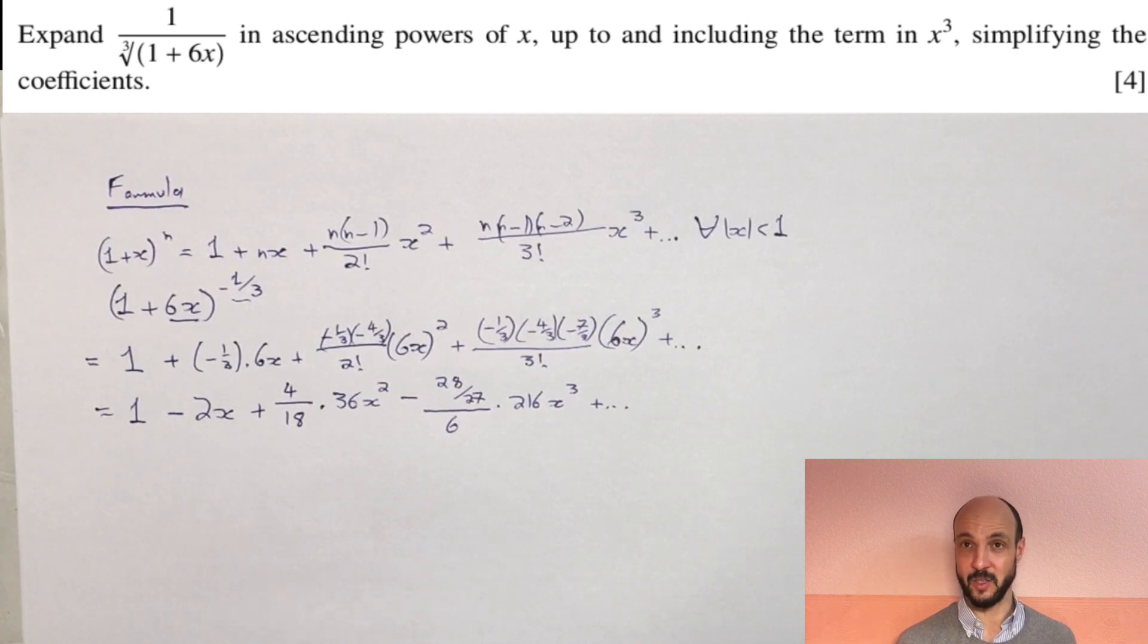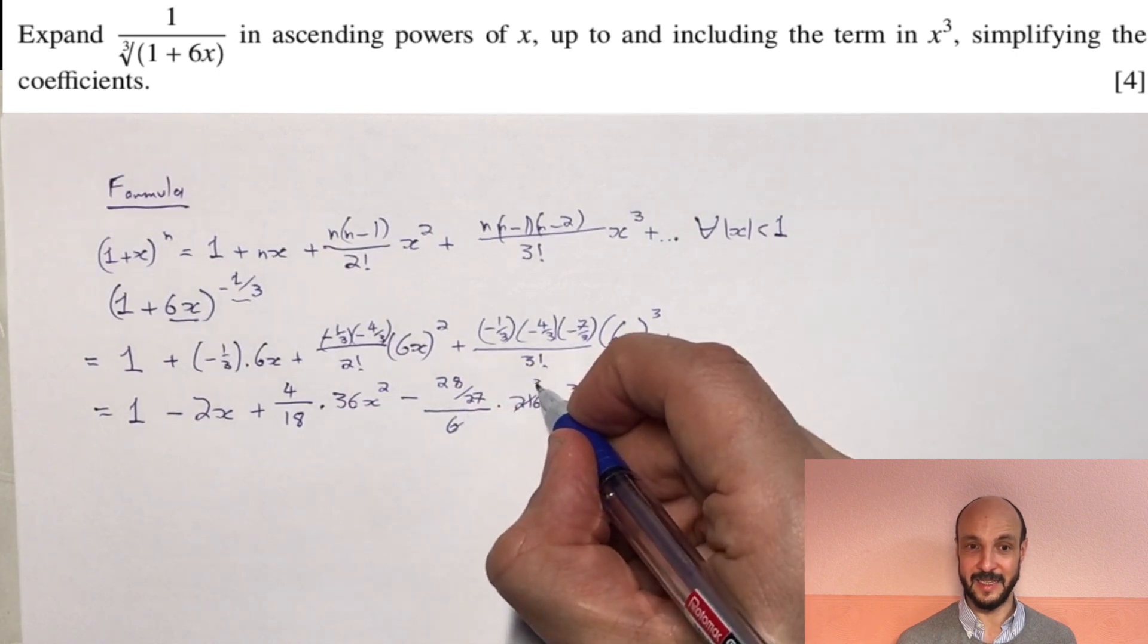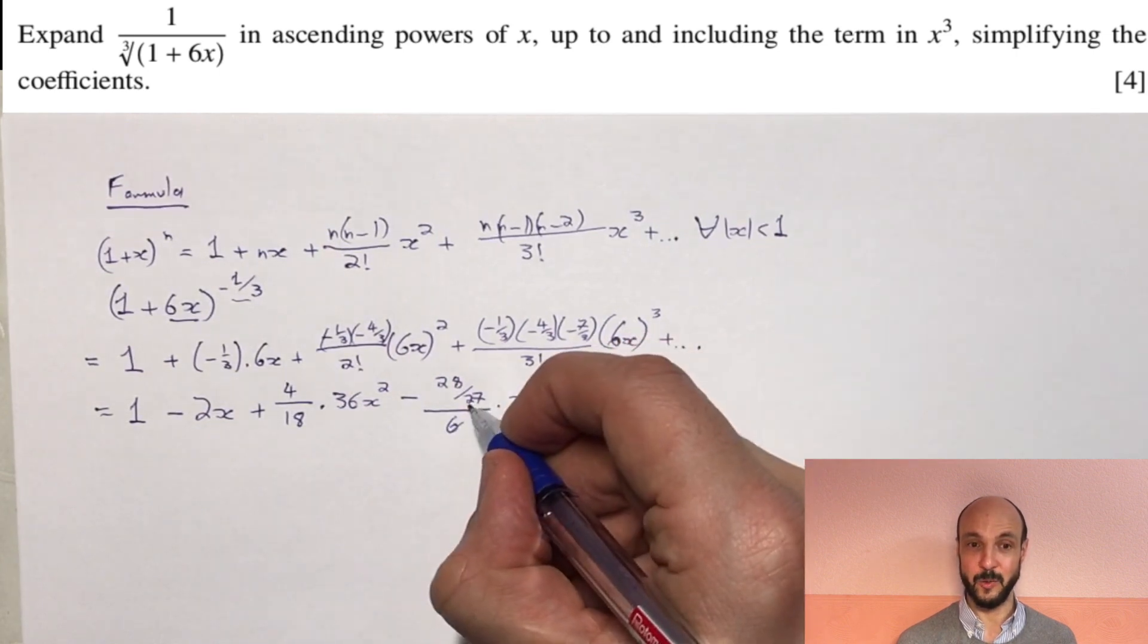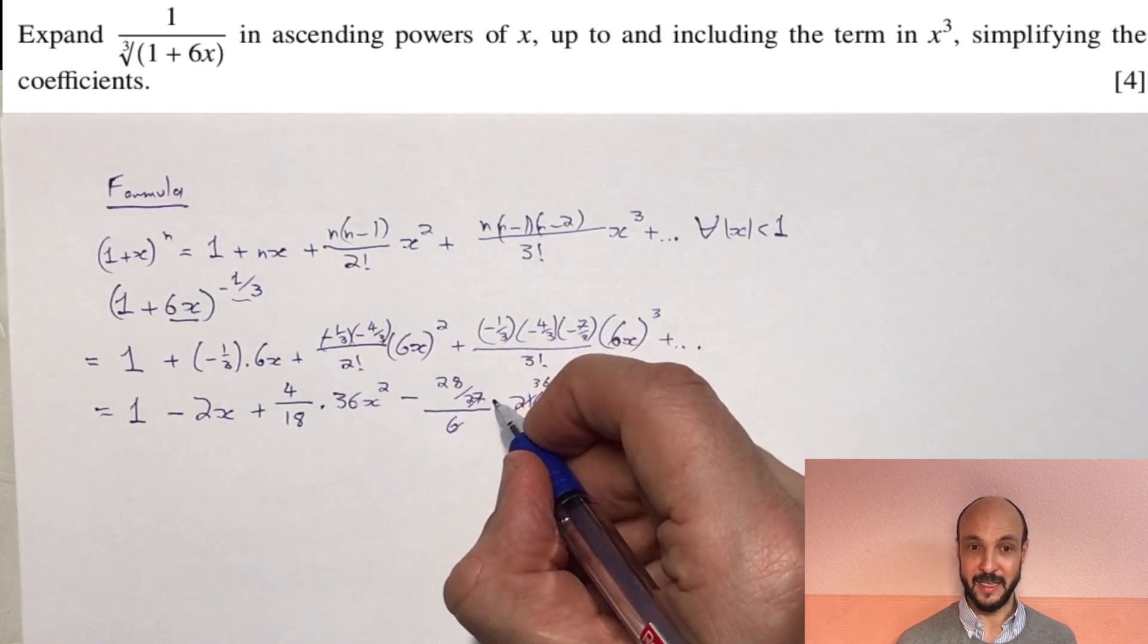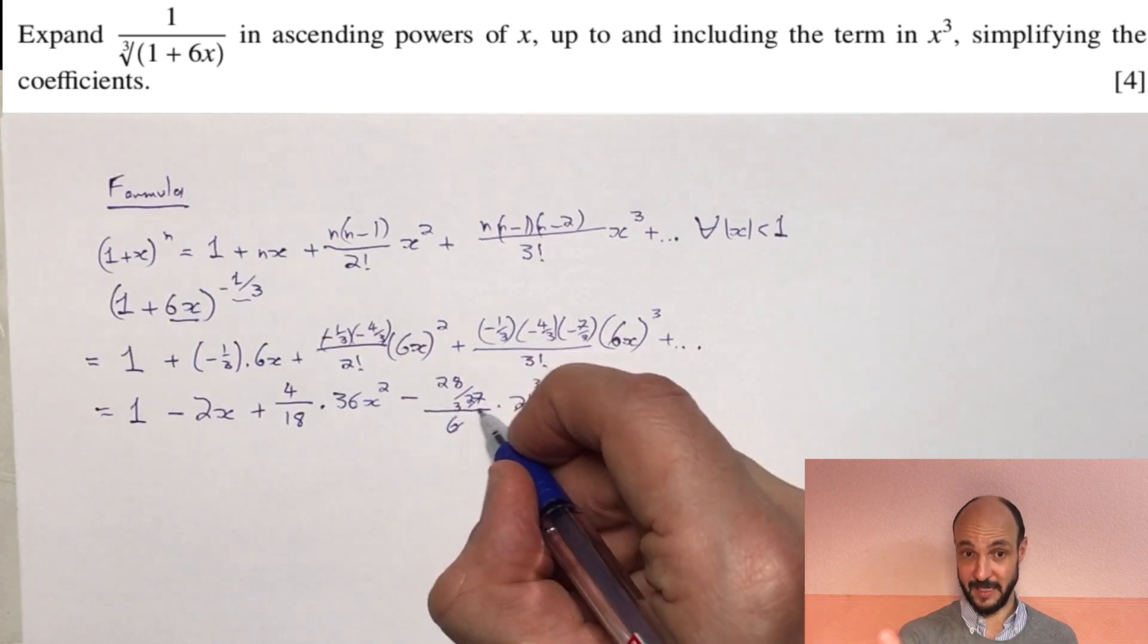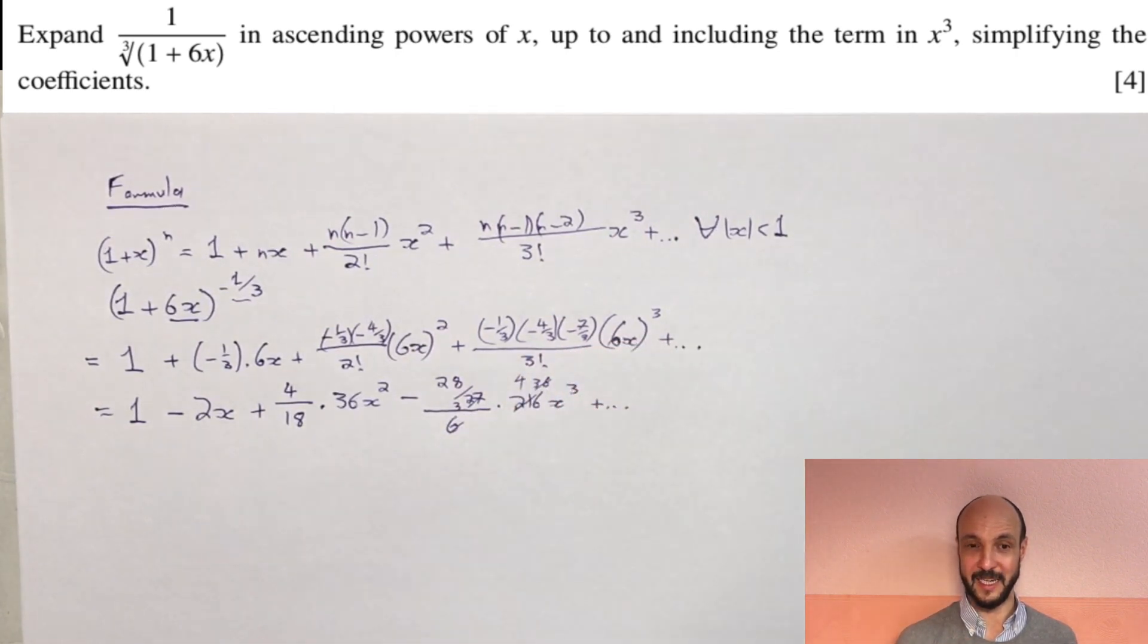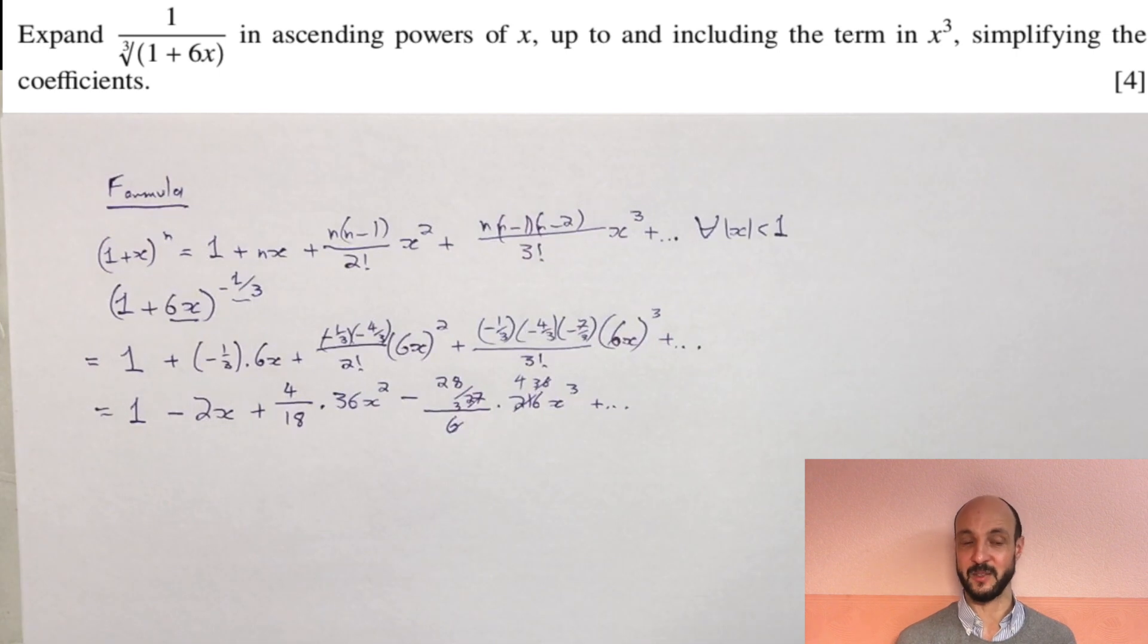So if we cancel out, the 216 cancels with the 6 to leave 36. The 36 cancels with the 27 to leave 3. And so we've got 28 over 3, and 4 on the top. So we've got 28 times by 4 over 3x cubed.